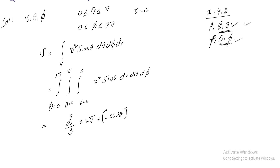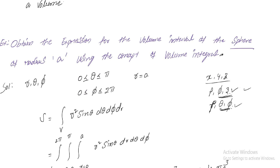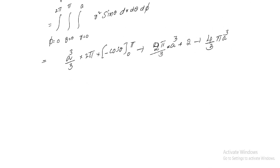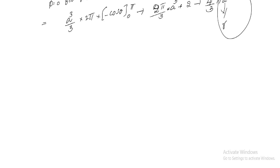Substituting the limits for cosθ: −cos(π) = 1 and −cos(0) = −1, giving a factor of 2. So the result is (2π/3)·a³ × 2 = (4/3)πa³. Thus we obtained the volume integration of a sphere. The standard formula for the volume of a sphere is (4/3)πr³, and here we got (4/3)πa³ where a = r — confirming that these geometry formulas are derived using coordinate systems and integration.